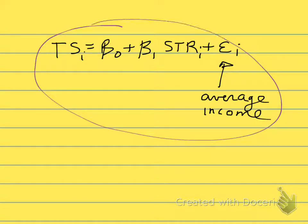The first example: suppose we have test score as the outcome and student-teacher ratio as the explanatory variable with our error term. Suppose one of those omitted, unobserved factors is average income, and suppose that average income is correlated with the student-teacher ratio.